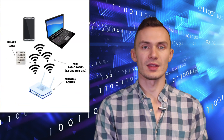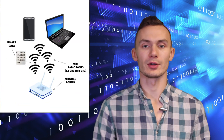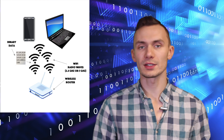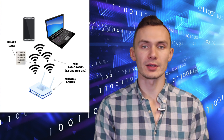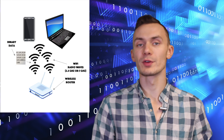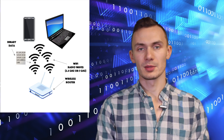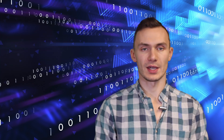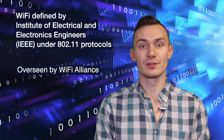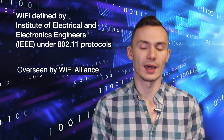Wi-Fi is the collection of radio waves that connect your devices to your router and thereby the internet. A wireless router is used to broadcast your local area network, or LAN, over these radio waves. Radio waves are used to transmit data in binary format between your devices and your router. There are many different versions of Wi-Fi that have improved over time, and these protocols have been defined by the Institute of Electrical and Electronics Engineers, or IEEE, under the 802.11 family versioning, and this development has been overseen by a group called the Wi-Fi Alliance.